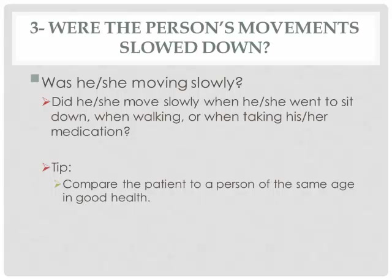The third item on the RADAR is: were the person's movements slowed down? How are the patient's movements — are they slow or not? It's based on all the movements you see when you enter the room. If you see the patient walking, getting up from a chair, or using his arm to take the medication, pay attention to all these movements and score this item. If you think the movements are slow, score it positive; otherwise, score it negative. If it's tricky, compare the movements of this patient with a person of the same age in good health. If your patient's movements seem slower, score it positive; otherwise, score it negative.